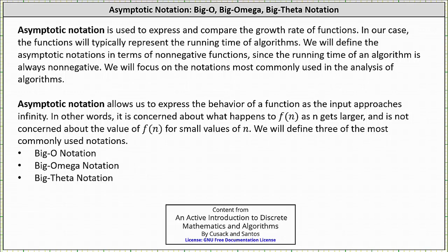This lesson focuses on Big-O notation. Asymptotic notation allows us to express the behavior of a function as the input approaches infinity. In other words, it is concerned about what happens to f(n) as n gets larger and is not concerned about the value of f(n) for small values of n. We will define three of the most commonly used notations.